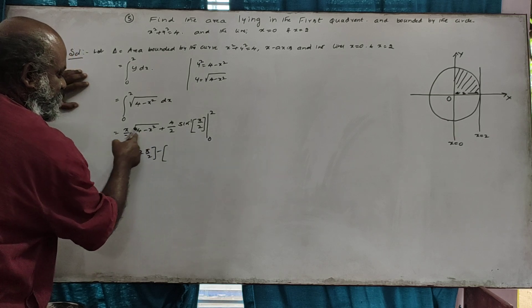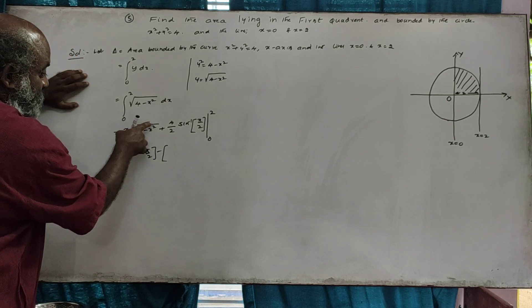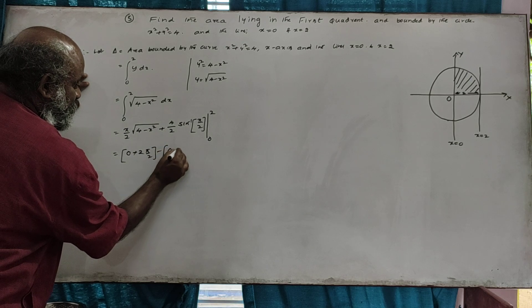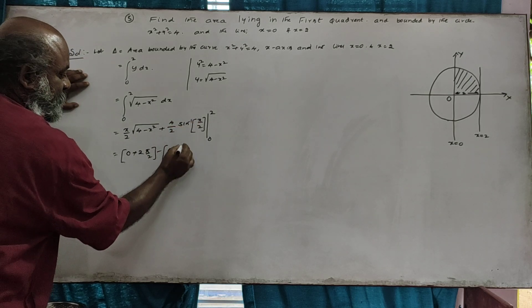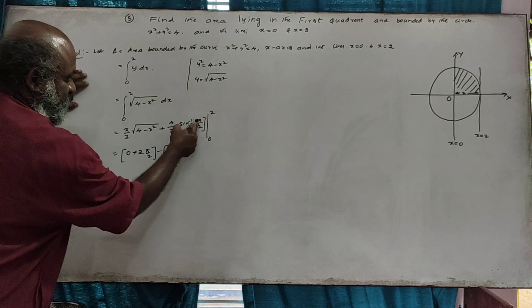Minus x equals 0: this gives 0 plus 0. The answer is pi over 2 square units.